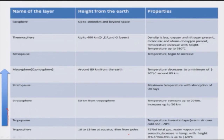The next layer is the mesosphere, around 80 kilometers from the Earth. Temperature decreases to a minimum of minus 90 degrees centigrade around 80 kilometers height. After that there is the mesopause, then the thermosphere. In the thermosphere, the density is less; oxygen and nitrogen are present as molecules and atoms. Temperature increases with height, up to 980 degrees centigrade. Then, thereafter, your exosphere has a height of 10,000 kilometers, and beyond that there is space. This understanding of atmospheric layers is very, very important.